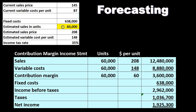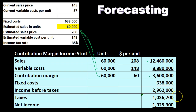For example, if we change the units to 60,000, then sales, variable costs, and contribution margin all update to 60,000. In an Excel worksheet, these items would be pulling from that cell, so it happens automatically. 60,000 times 208, 60,000 times 148, 60,000 times 60 — we get the 3,600,000 contribution margin minus the same fixed costs, which didn't change because they're fixed. That gives us income before taxes, and subtracting the calculated taxes gives us our net income.